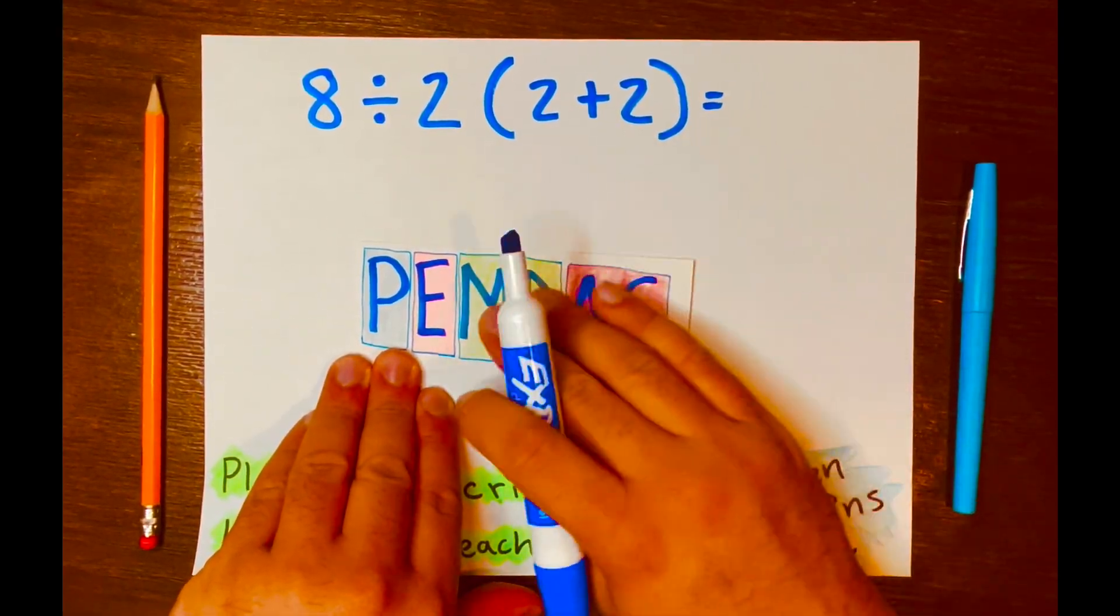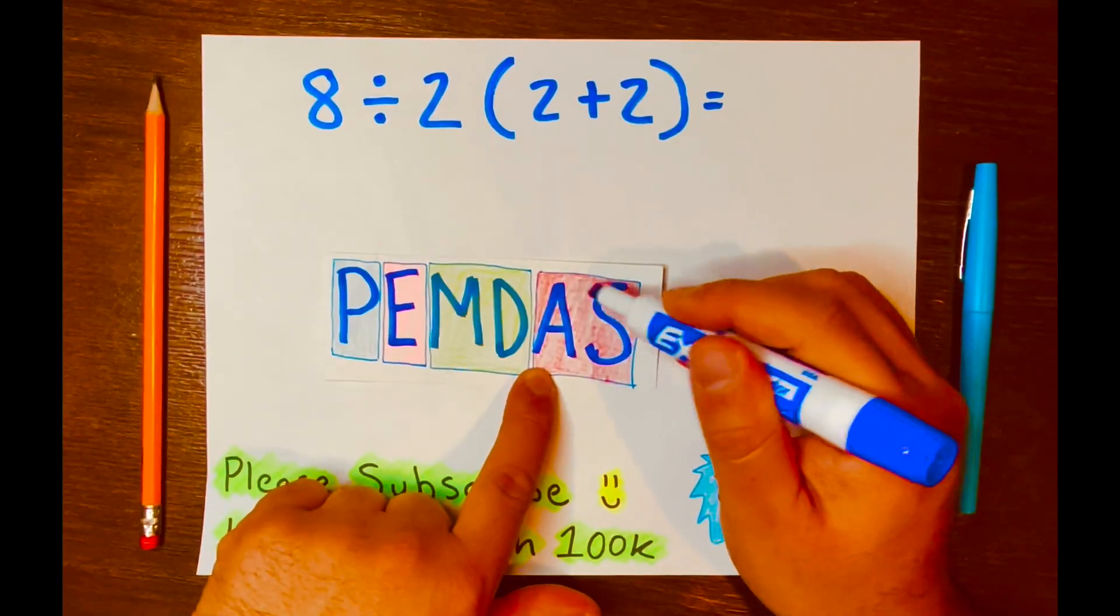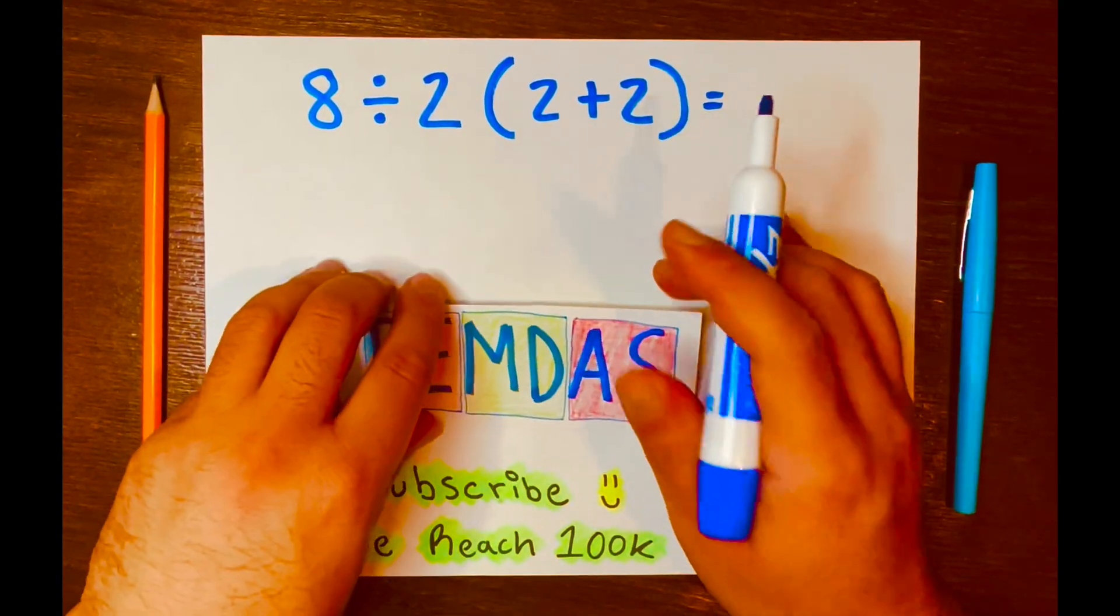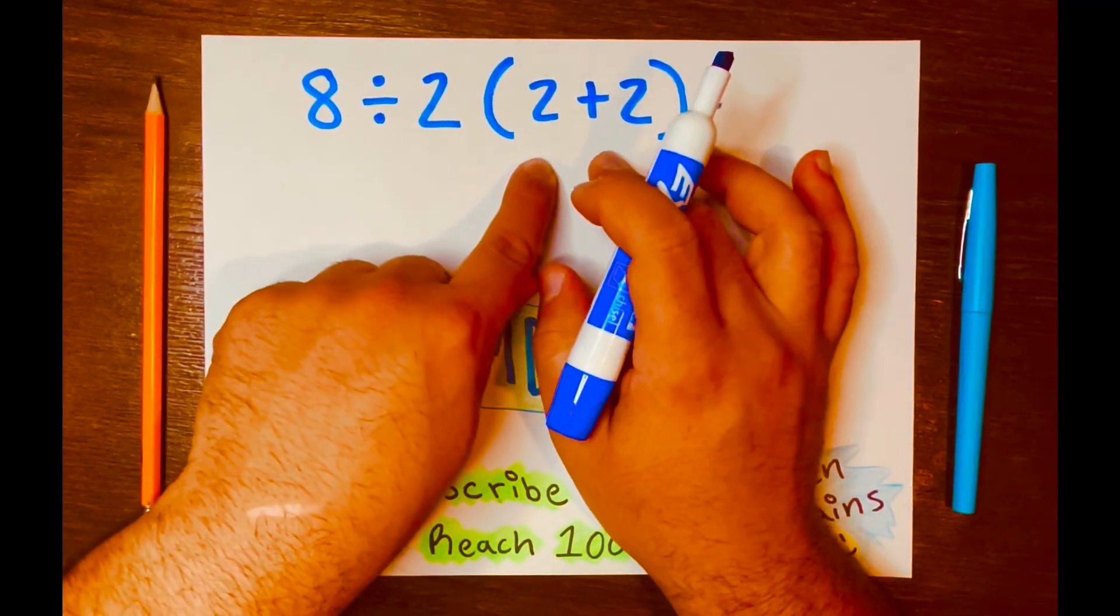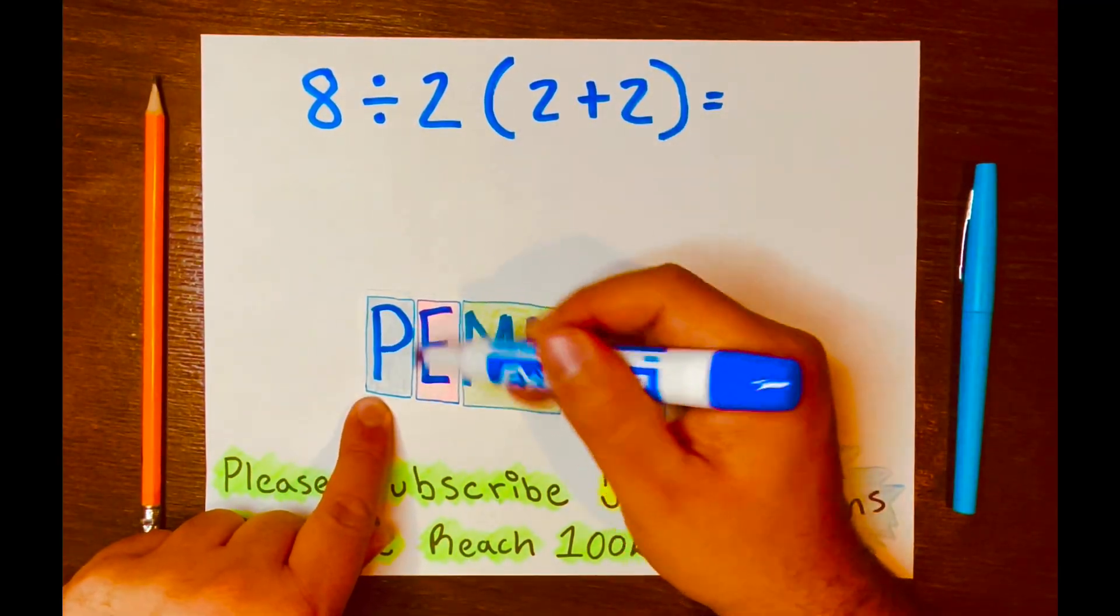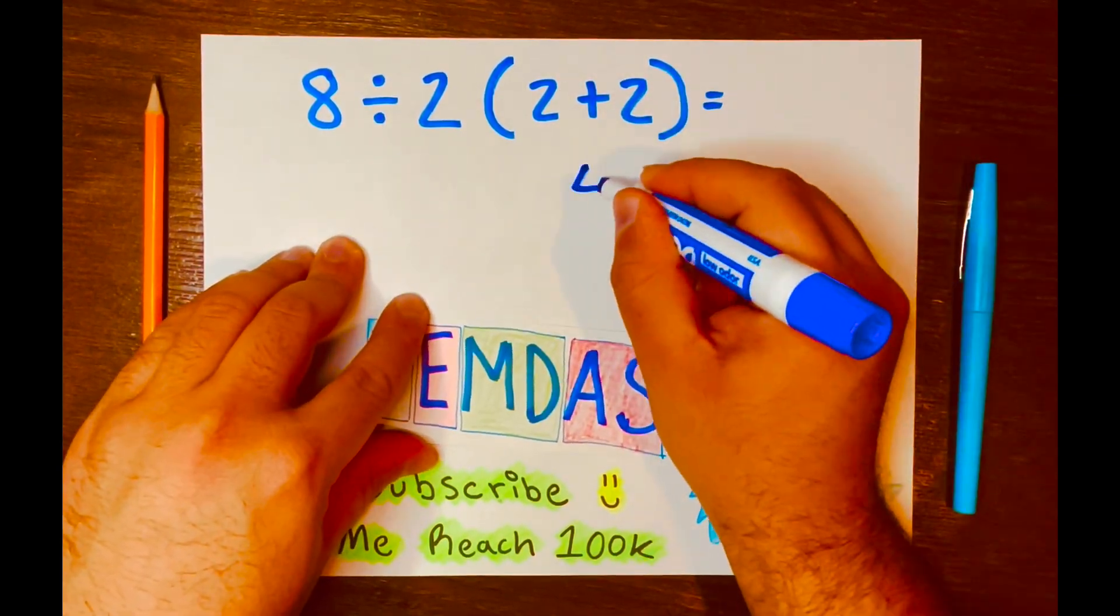There are four different levels in PEMDAS, and parentheses will be the highest level, and AS will be the lowest level. All right, let's go ahead and tackle this math problem. Now, parentheses will go first, because it's the highest level in PEMDAS. So 2 plus 2 is 4.